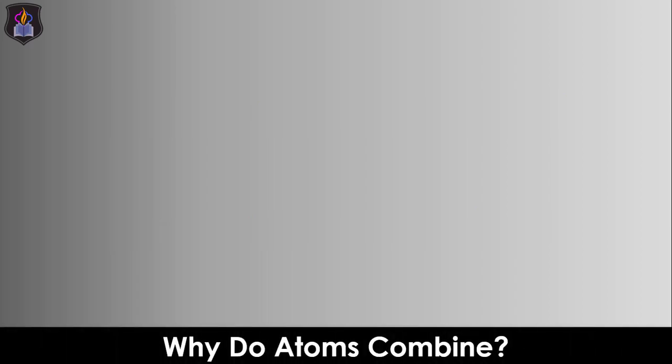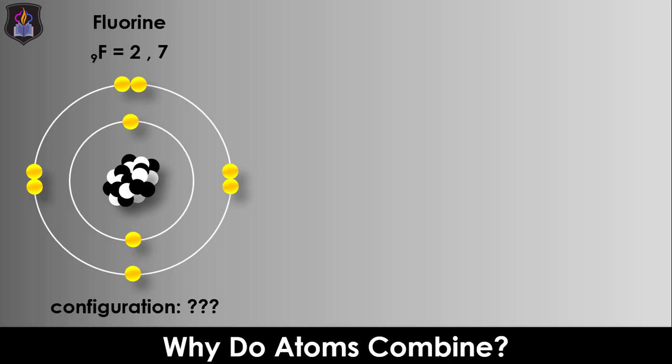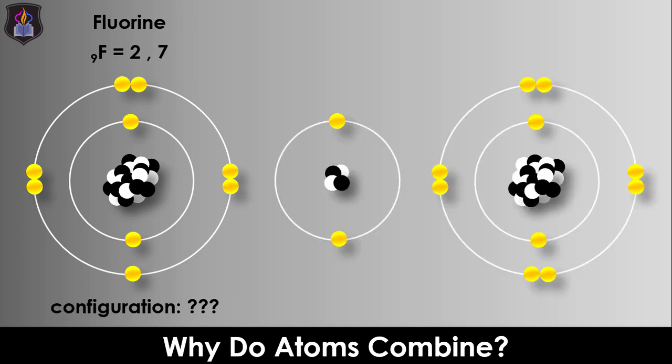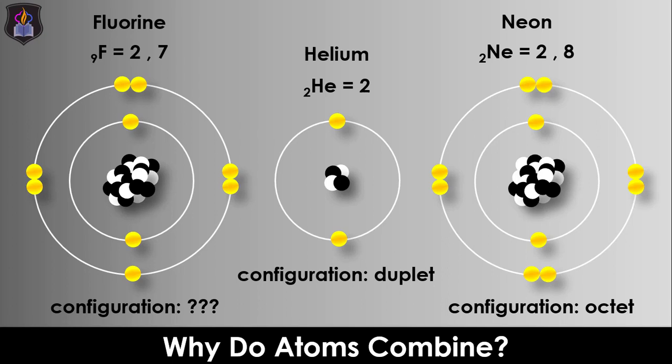Atoms combine with one another because they want to attain a stable configuration like the noble gases. The noble gases which include helium, neon, argon, krypton, xenon and radon have completely filled outermost or valence shells and thereby attain the duplet structure with two electrons in the outermost shell or octet structure with eight electrons in the outermost shell. Note that apart from helium all other noble gases possess the octet structure or configuration.